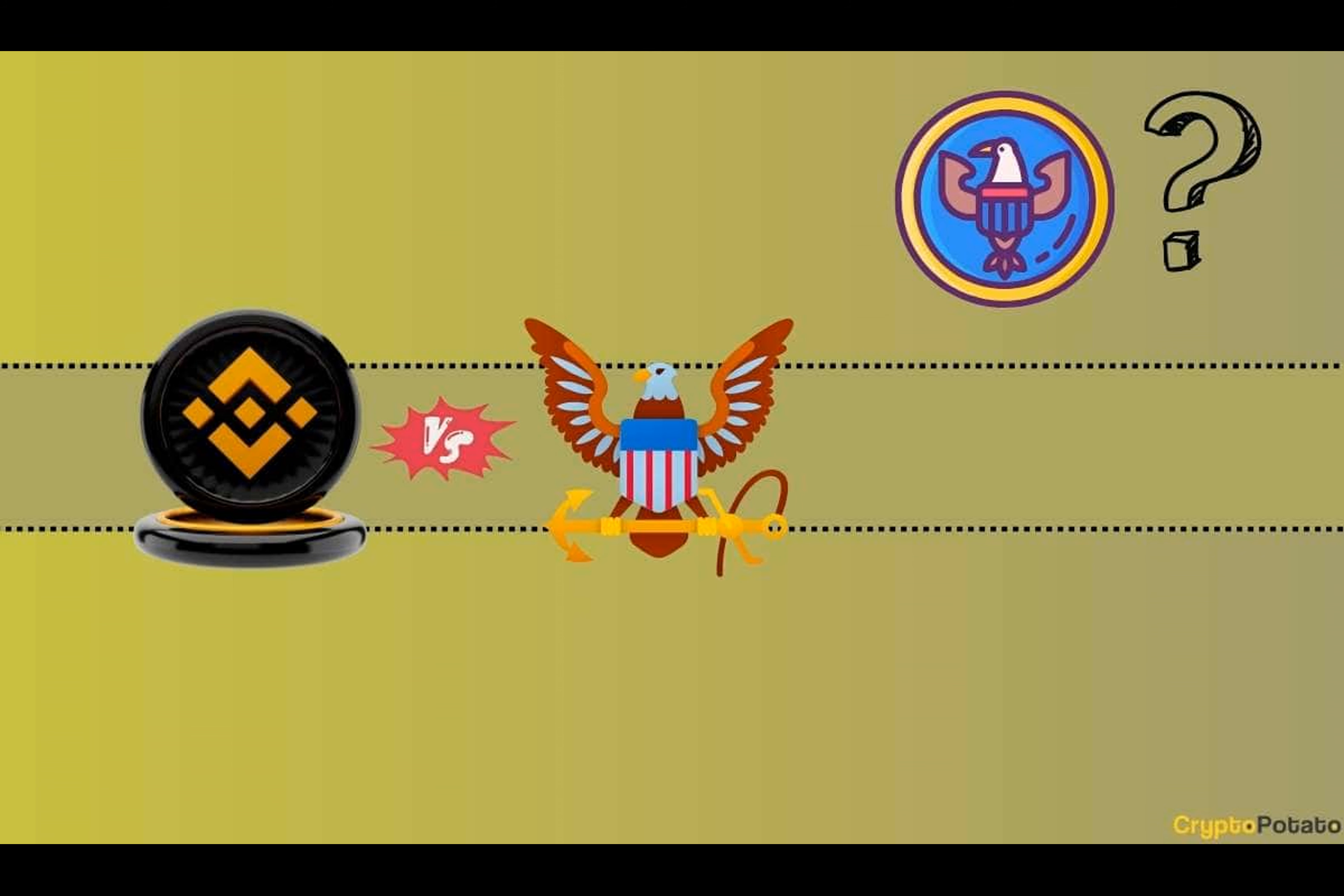He also reminded that America's securities regulator filed its lawsuit against Kraken at the exact time when the authorities released their press conference regarding Binance. Ripple's CLO compared the SEC's attitude to that of a petulant child who can't stand being ignored, suggesting the watchdog has shown juvenile behavior.